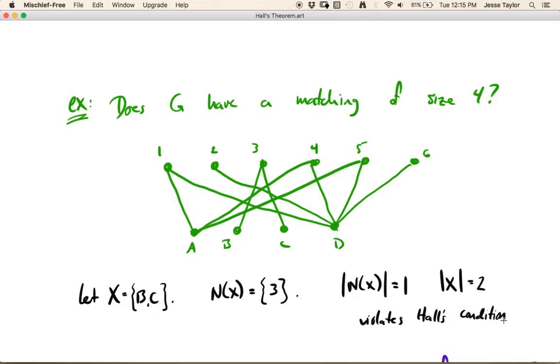Because remember, Hall's condition said that the neighborhood is always at least as big as the set itself. And so you can essentially, I mean, you can see what's going wrong here, right? If you want to make a matching that covers up all these vertices, well, you can either have B3 in that matching or you can have C3 in that matching, but not both. So whichever one of these edges you take, the other vertex is going to get left out.